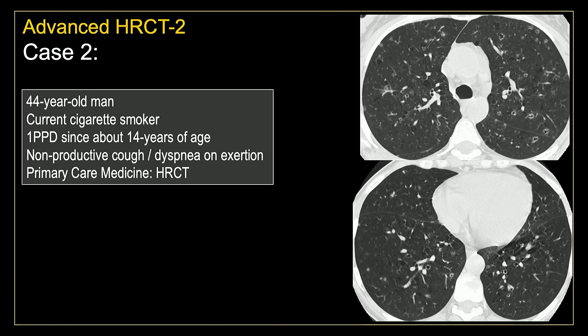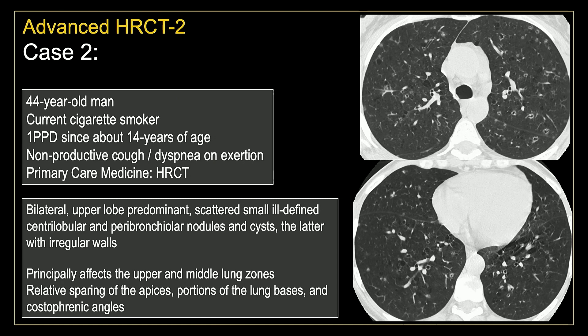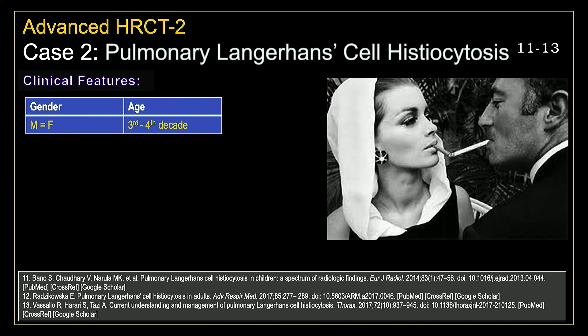Our second case is a 44-year-old man, current cigarette smoker, who has been smoking a pack per day since he was 14 years old. He has a non-productive cough and dyspnea on exertion, and primary care referred him for an HRCT scan to help explain his symptoms. On CT examination, we see bilateral upper- and mid-lobe predominant scattered small centrilobular and peribronchial nodules. We also see cystic lesions with thick irregular walls in many locations. This principally affects the upper and mid-lung zones, with the apices and extreme lung bases spared. This clinical scenario and these imaging features are consistent with a diagnosis of pulmonary Langerhans cell histiocytosis.